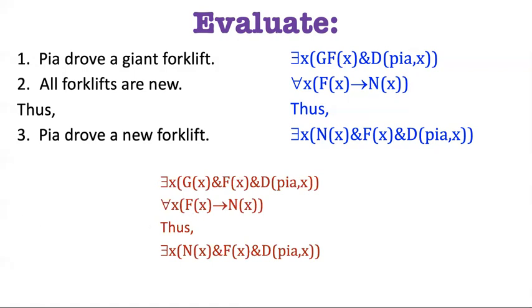Remember we said at the beginning of the quarter that validity is a structural property of an argument. And that means when we're doing translations into FOL, we need as much structure revealed in our translation as is necessary for demonstrating its validity. And here the validity depends upon the structural connection between these two predicates, both being F and the same thing happening down here in the conclusion.